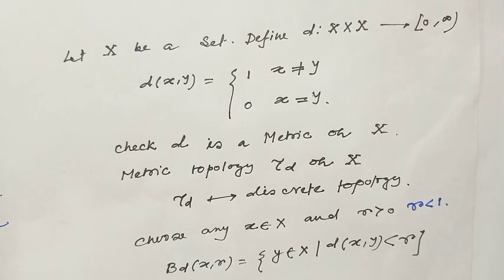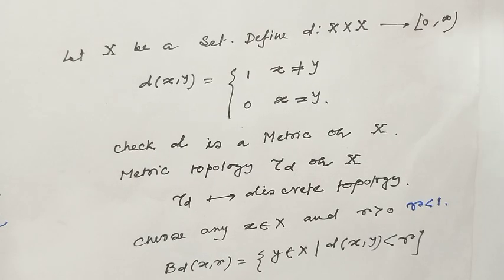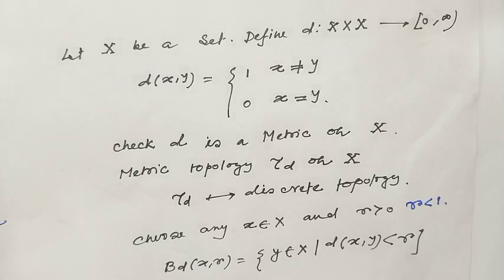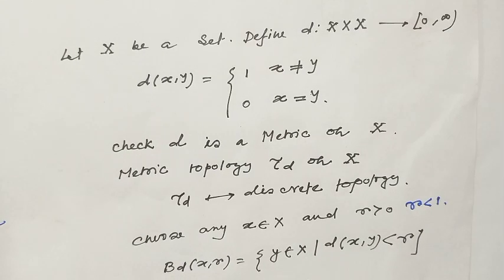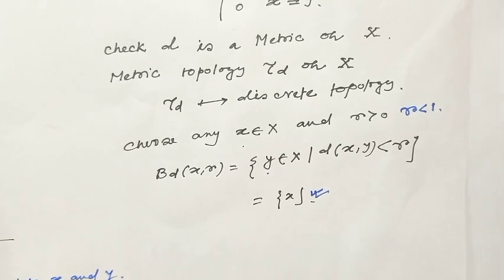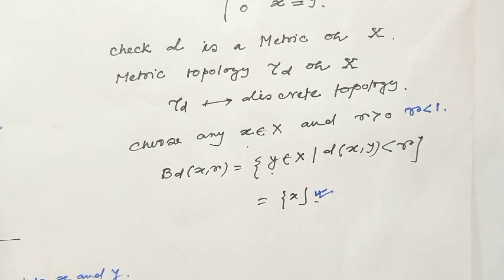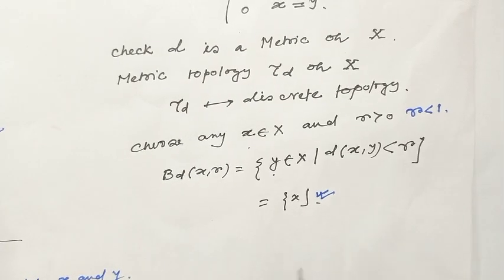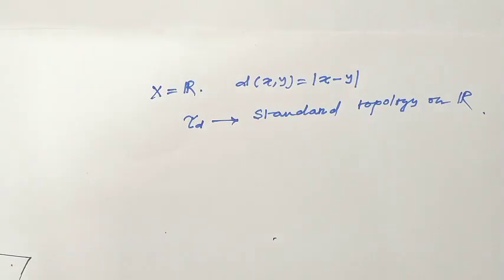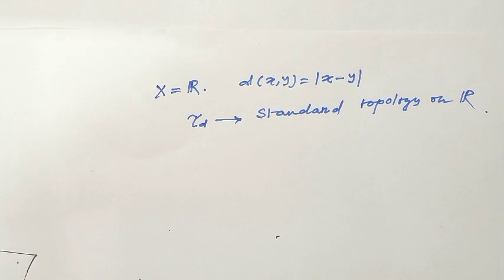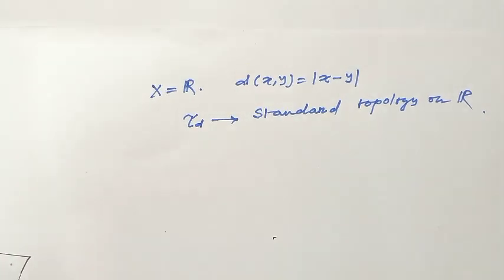As an example, consider a set X and define a metric D from X × X to [0, 1] where D(x, y) = 1 when x ≠ y and D(x, y) = 0 when x = y. This is the discrete metric on X. The discrete topology is generated by singleton sets as the basis. When X equals R, define the metric D as the absolute value |x - y|. Then τ_D generated by this metric is actually the standard topology on R.